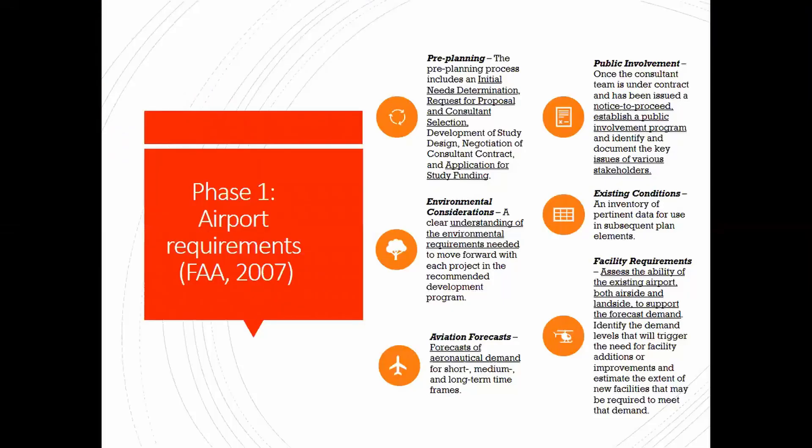There are a couple of phases to airport development. Phase one is airport requirements. First, you do the pre-planning — you need to know what the initial needs of the place are, then get a proposal from consultants, select your consultants, and apply for study funding. Then you need to get your environmental considerations right and understand the environmental requirements. Then comes your aviation forecast — the forecast of aeronautical demand — and your public involvement, which means involving the public to know their concerns.